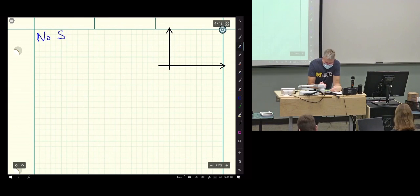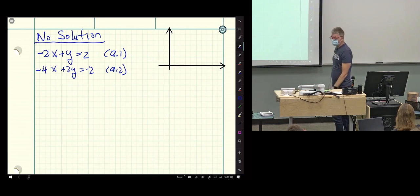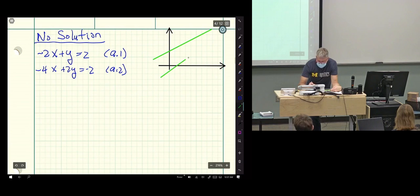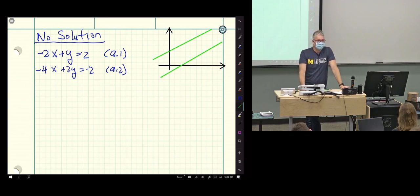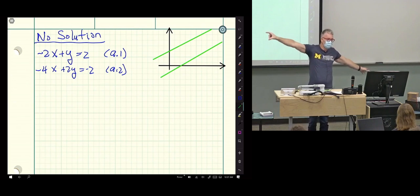No solution. If we do minus 2x plus y equals 2, I'll call that equation a.1. And if we do minus 4x plus 2y equals minus 2, I'll call that equation a.2. So why do we have no solutions? Well, one of these lines looks like this. And the other line looks like that. They're parallel. What does the solution mean? It means there's a point in common between the two equations. And Euclid told us if two lines are parallel and they go off forever, they will never meet. That's Euclidean geometry. So once you draw the picture, it's clear.